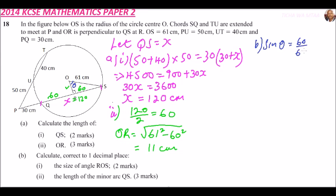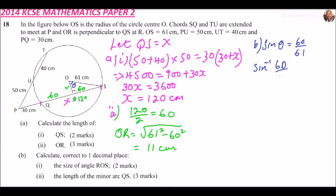We call it θ. You can say it is opposite, which is 60, over the hypotenuse, which is 61. So you can use your calculator and say sin inverse of 60 divided by 61.